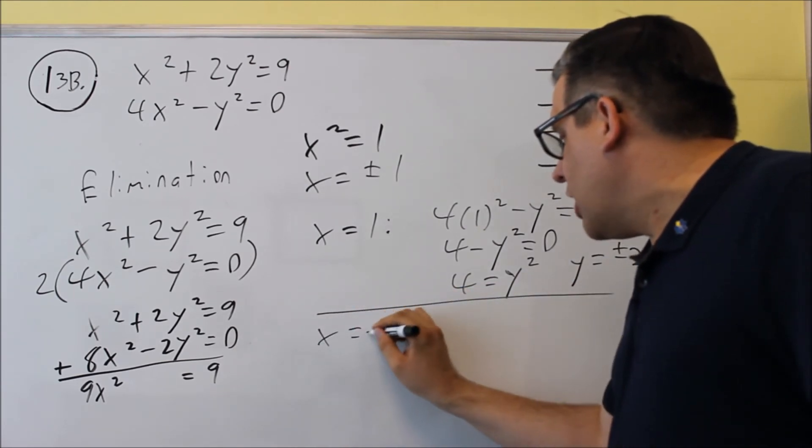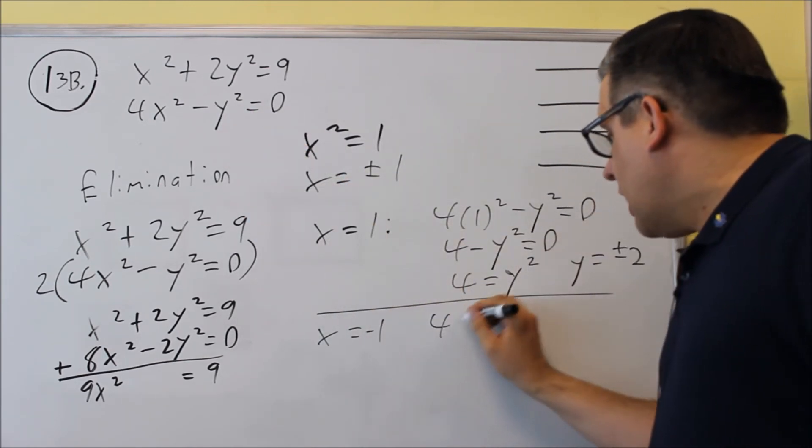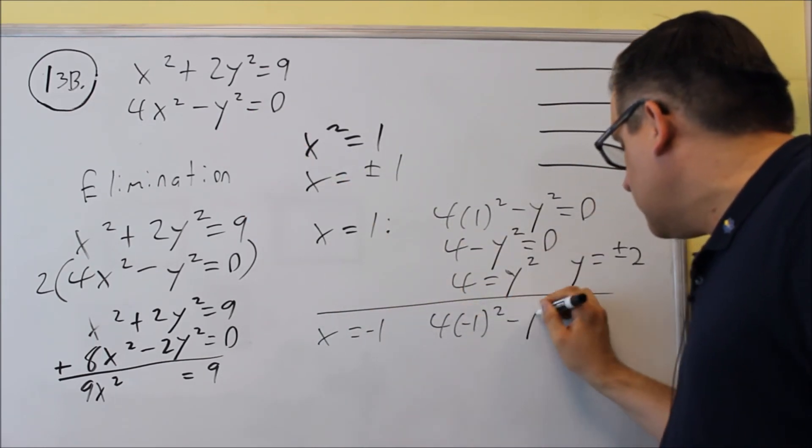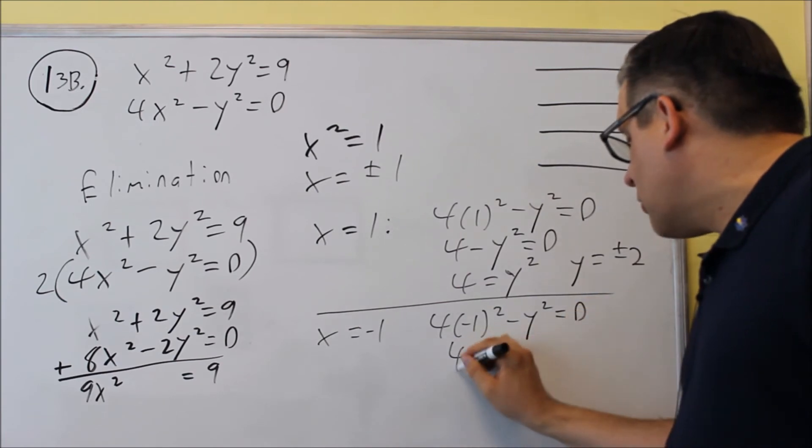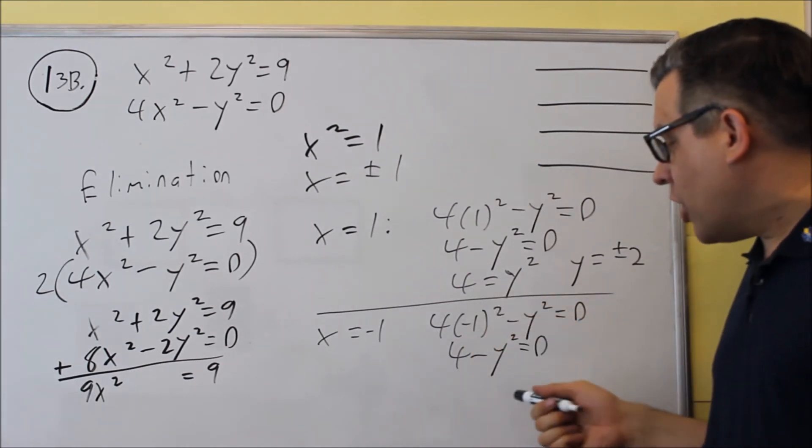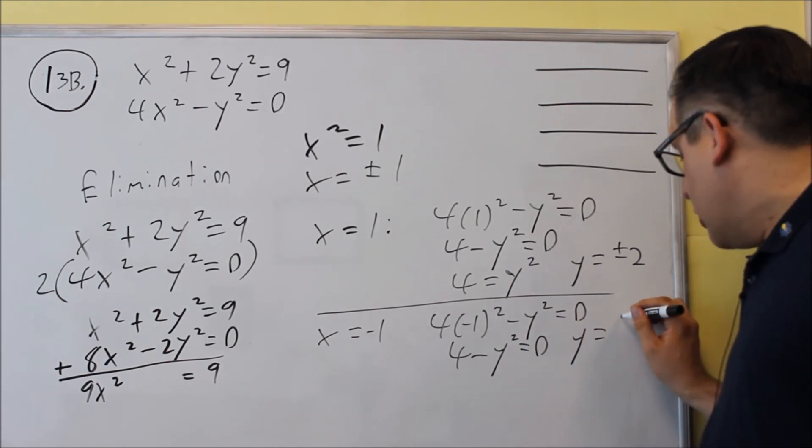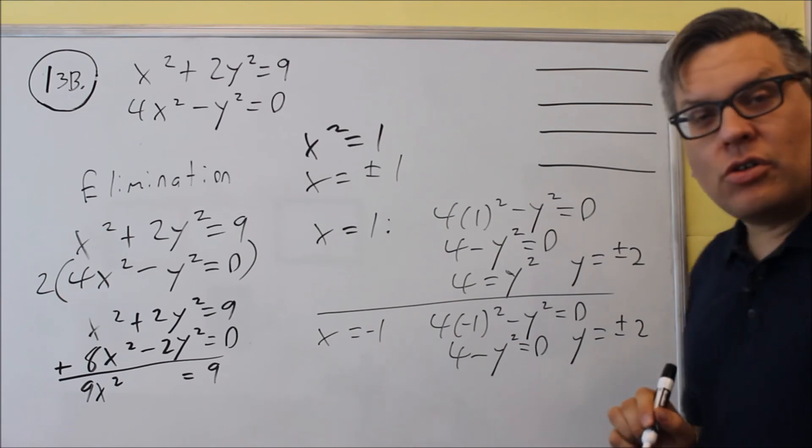Let's now solve the second equation. We'll put in x is negative one back into here. And when you do that, you're actually going to get the same result because you still end up with the same equation. When you have negative one squared, you still get four minus y squared equals zero. And again, you're going to get plus or minus two for that one.